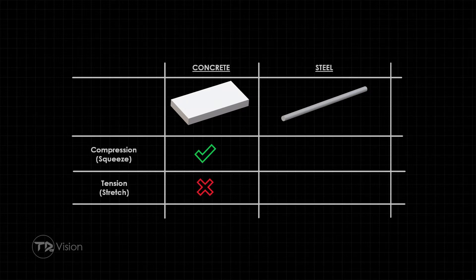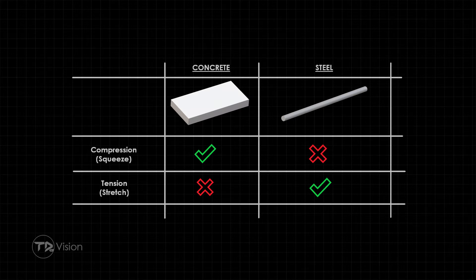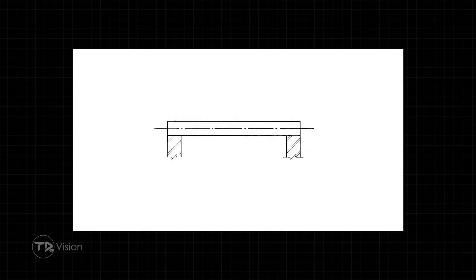Concrete loves when you squeeze it. However, if you try to stretch concrete, that is when it is most likely to break down. Steel, on the other hand, performs best under tension rather than compression. Because of these opposing properties, combining the two materials makes perfect sense — that is why you always see concrete and steel together. If you take a look at this diagram, you will see a slab of concrete on top of two supporting members with no steel inside of it.